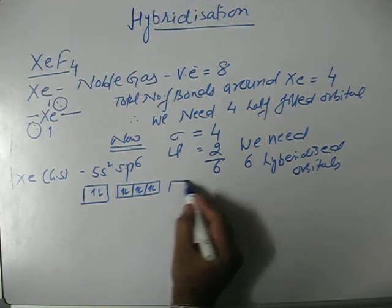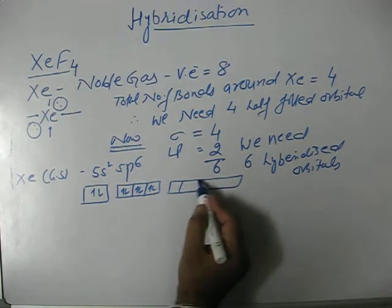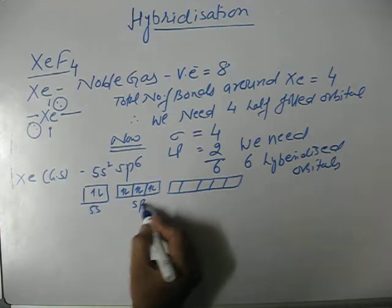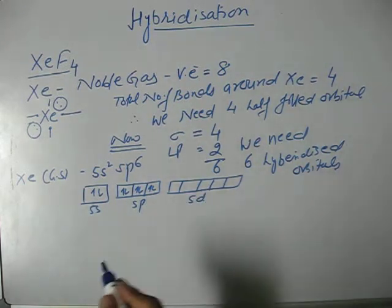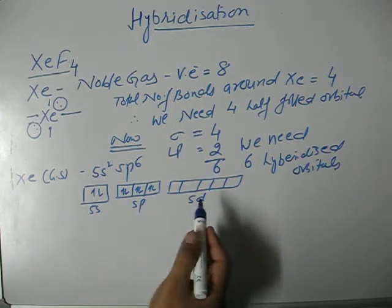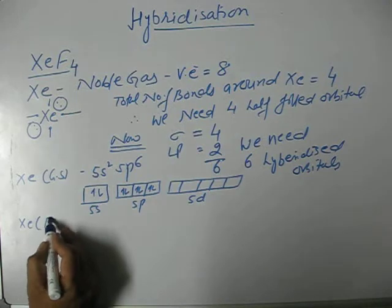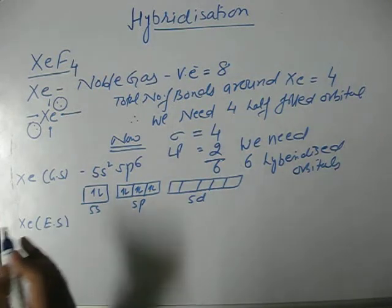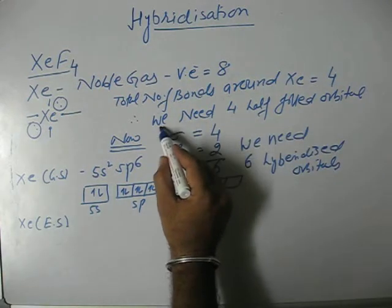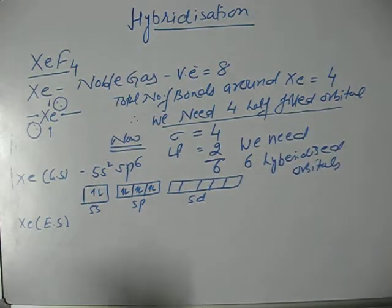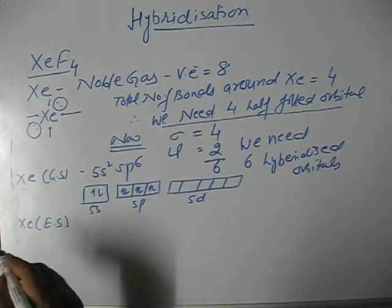But we know xenon have vacant d orbitals. This is 5s, 5p, and this is 5d. Because of vacant d orbitals, xenon can move to the excited state. But before that, we have to see how many half-filled orbitals xenon needs. We have already calculated it needs 4 half-filled orbitals because it wants to form 4 covalent bonds around it.